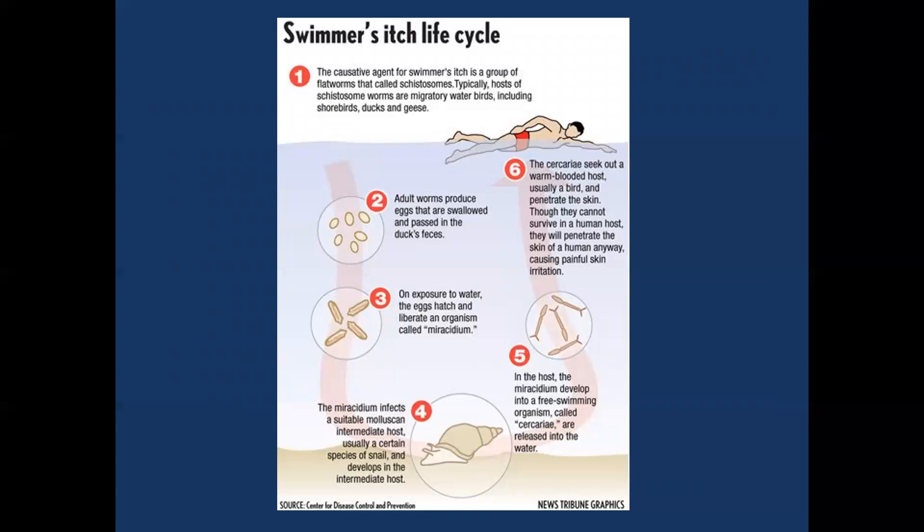The swimmer's itch life cycle: adult worms produce eggs passed in duck feces, which hatch in water, liberating miracidia that infect underwater snails (the intermediate host). The snails release free-swimming cercariae into the water — these seek warm-blooded hosts, typically birds, but occasionally catch humans swimming. Unable to survive in humans, they burrow into the skin, cause a histaminergic response, and die. Treatment is purely symptomatic: oral antihistamines and topical corticosteroids.